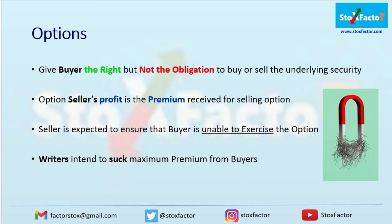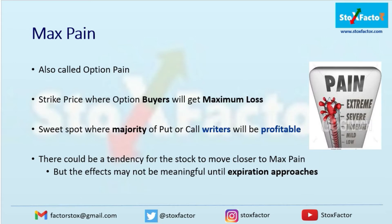Now let us discuss what Max Pain is. Max Pain is actually a derivative of the option chain. At every strike price, put writing or call writing is going on. We have to think from the writer's perspective. The sweet spot where the majority of put or call writers will be profitable is called the Max Pain area. There could be a tendency for the stock to move closer to Max Pain, but the effects may not be meaningful until expiration approaches. In short, Max Pain is the area where option sellers will have minimum loss at expiry and option buyers will carry maximum loss.